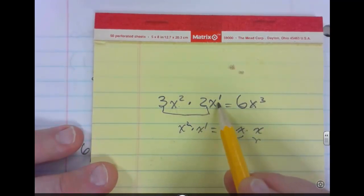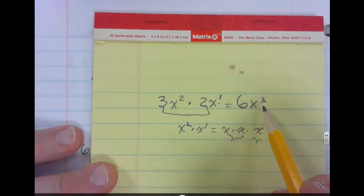So x to the second times x to the first is going to give us x to the 2 plus 1 or x to the third power. And that's going to hold true with all of our multiplications.